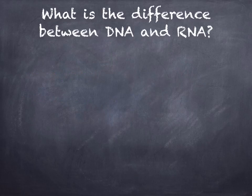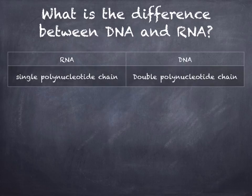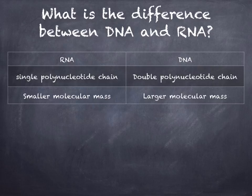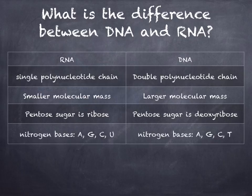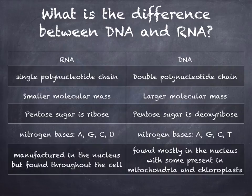Now let's look at the difference between DNA and RNA. RNA is a single polynucleotide chain, whereas DNA is a double polynucleotide chain. RNA has a smaller molecular mass; DNA has a larger molecular mass. In RNA, the pentose sugar is ribose; in DNA, the pentose sugar is deoxyribose. In RNA, the nitrogenous bases are adenine, guanine, cytosine, and uracil; in DNA, the nitrogenous bases are adenine, guanine, cytosine, and thymine. RNA is manufactured in the nucleus but can be found throughout the cell, whereas DNA is found mostly in the nucleus, with some present in the mitochondria and chloroplasts.